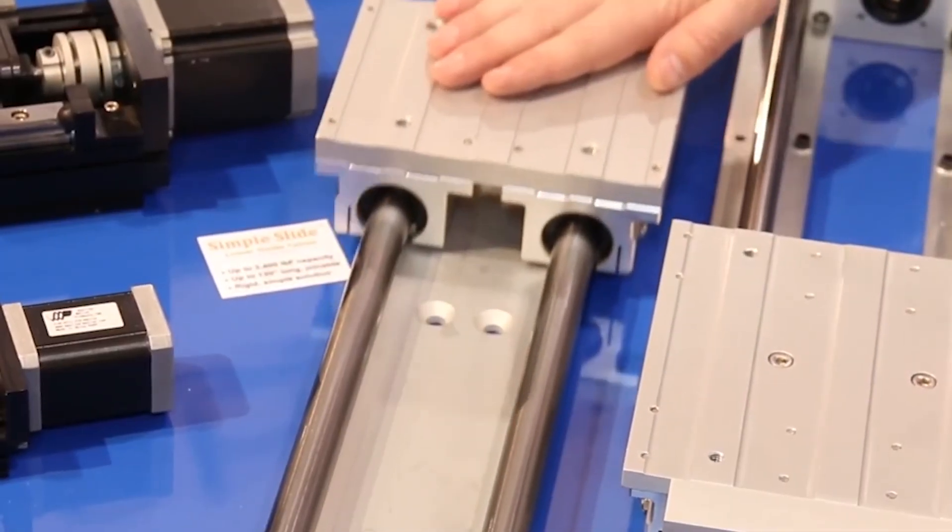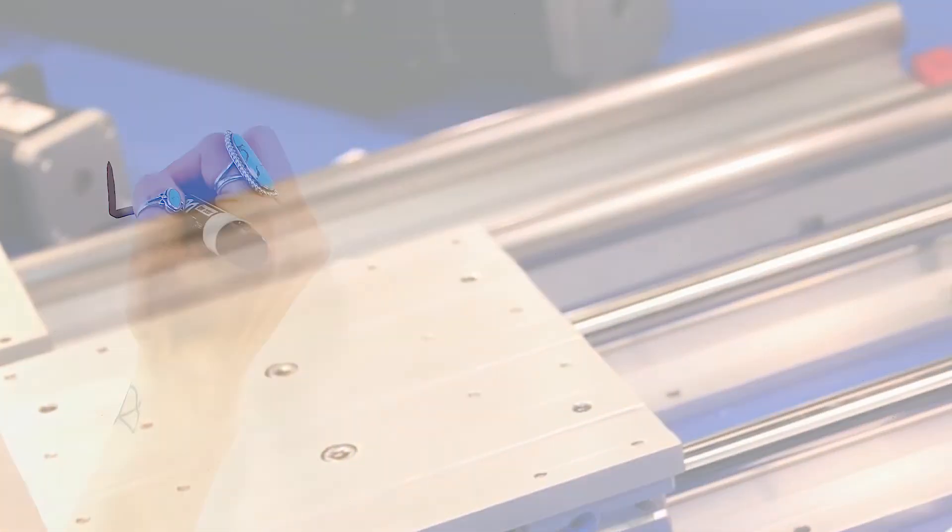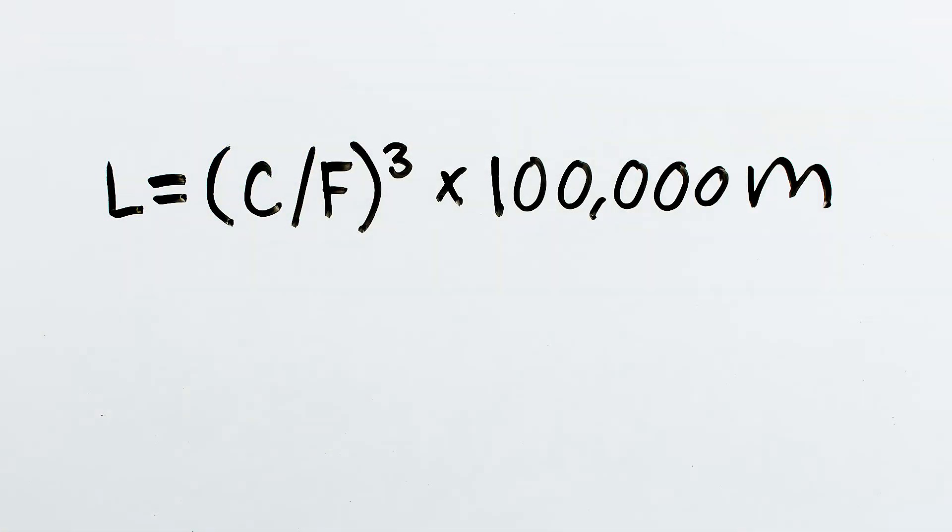We mentioned earlier that the bearing life equation is slightly different for bearings that use balls versus rollers. The difference is in the superscript on the load ratio. For recirculating ball bearings, the ratio of dynamic load capacity to applied load, C over F, is raised to the third power.